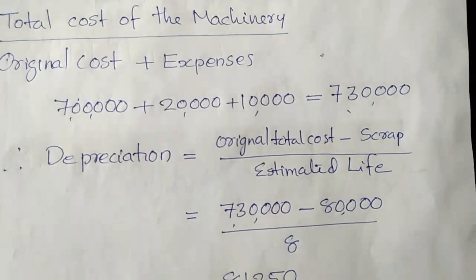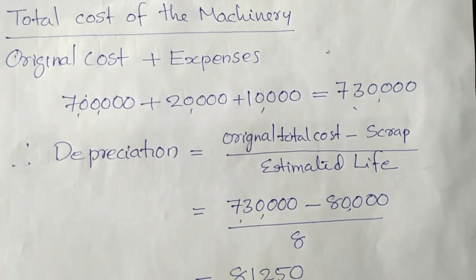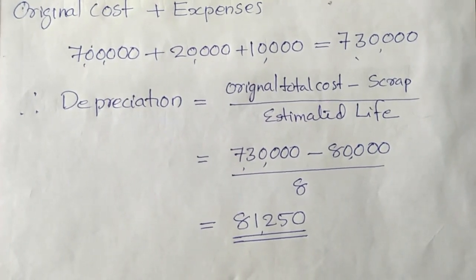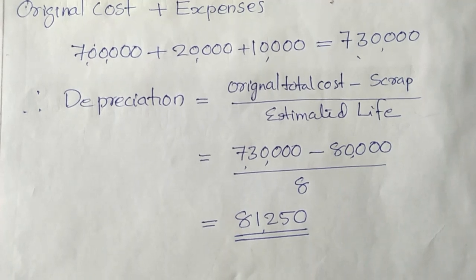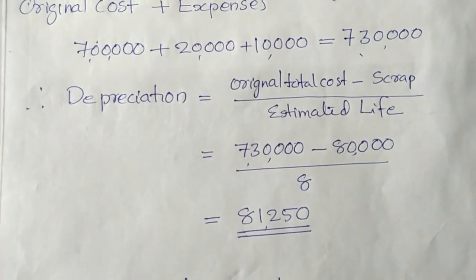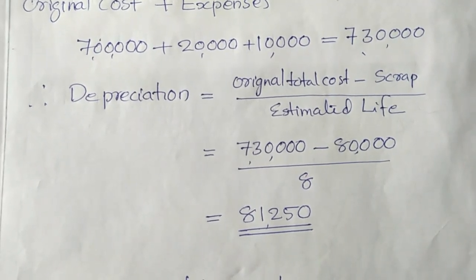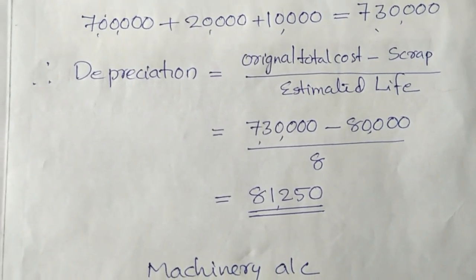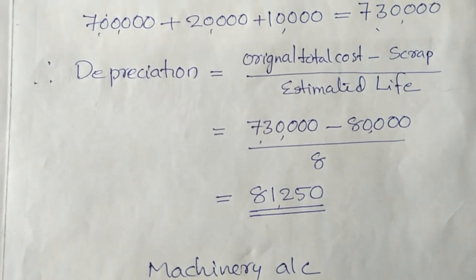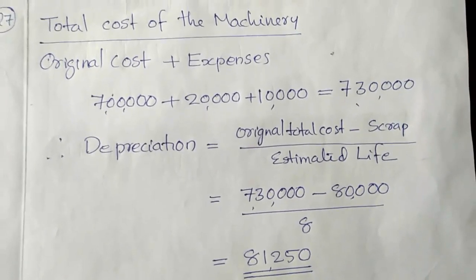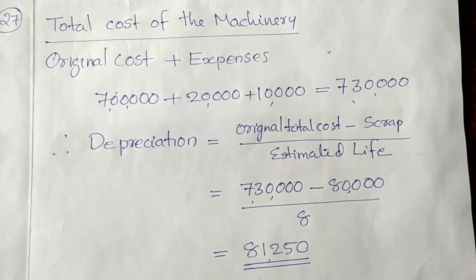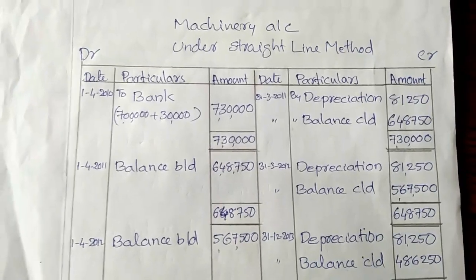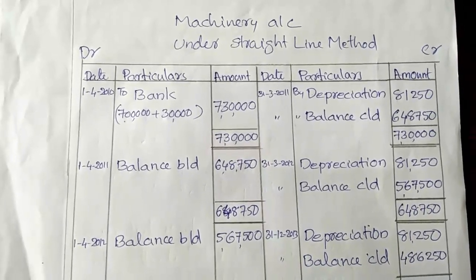The total cost is Rs. 7,30,000 (original cost Rs. 7,00,000 plus expenses). Minus scrap value of Rs. 80,000, divided by estimated life of 8 years. This gives a depreciation of Rs. 81,250 per year. We now prepare the machinery account under the straight-line method.